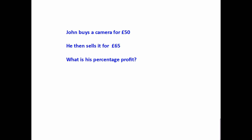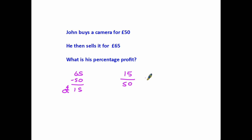Now let's look at a situation where we are being asked to calculate profit. John buys a camera for £50 and then sells it for £65. What is his percentage profit? It is exactly the same scenario as a change in price. We look for the difference: 65 minus 50 means he made £15 in profit. We express the fraction as the change in price divided by the original price, which is 50, then multiply by 100. So 15 divided by 50 gives us 0.3.